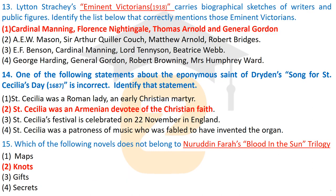Question thirteen: Lytton Strachey's 'Eminent Victorians,' published in 1918, carries biographical sketches of writers and public figures. Identify those eminent Victorians. The correct list includes Cardinal Manning, Florence Nightingale, Thomas Arnold, and General Gordon — these are the eminent Victorians given biographical sketches by Lytton Strachey.